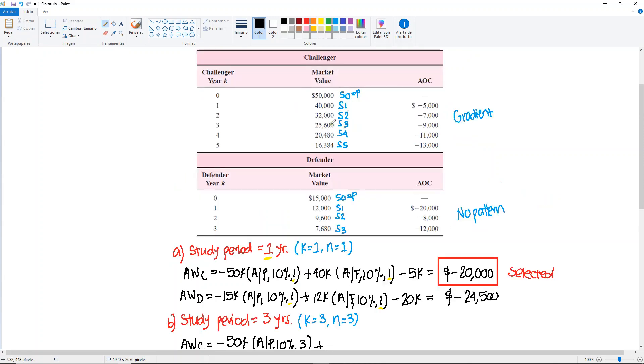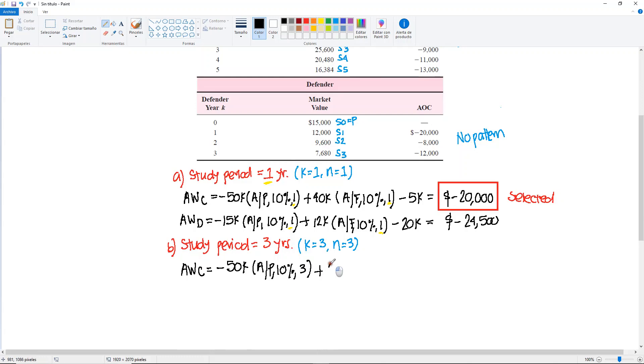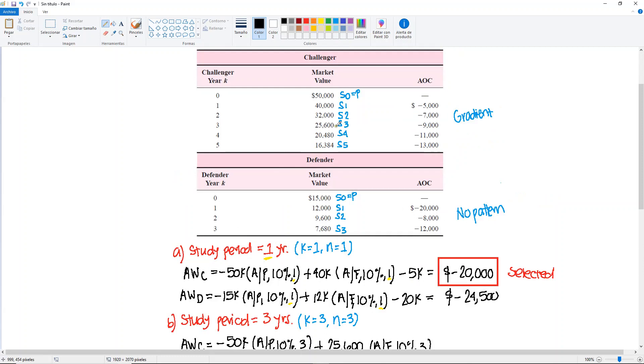plus, in this case, S3 is 25,600. And that must be converted to A, also for three years. And then we have the gradient. So now we can see clearly that there's a gradient, so we have a base 5, and then it increases by 2.